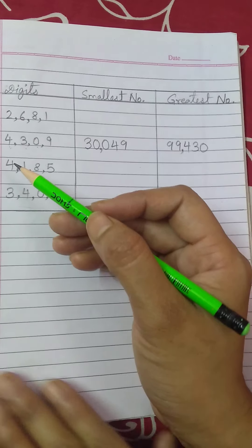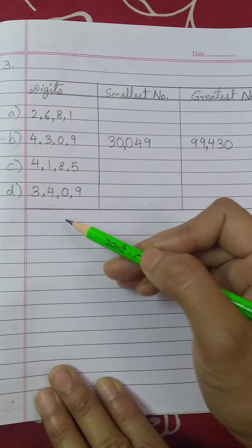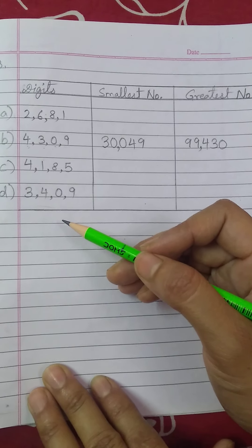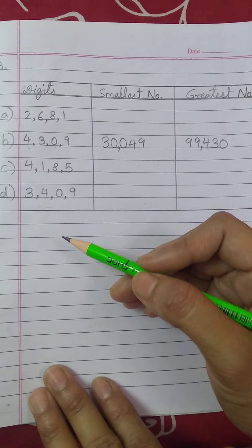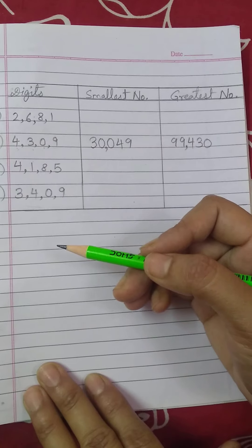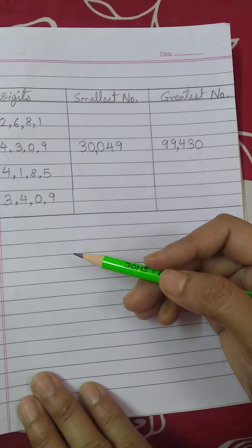To students, aap jab book mein dekhoge, third question also have two parts. So, these two parts are added by me. You have to do them all in your maths copy. Hope you have understood this exercise 1.6, yahi aapka classwork homework hai, to aap achha se karna. Okay students, stay well, stay happy, bye-bye.